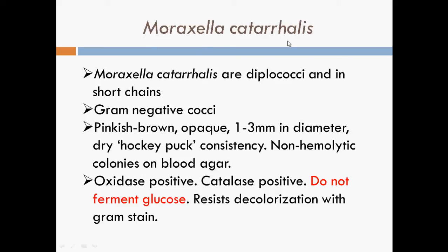The next bacterial genus is Moraxella. Moraxella catarrhalis is the bacteria we are going to look at under this genus. Moraxella is a genus of gram-negative bacteria named after a Swiss ophthalmologist called Victor Morax. Moraxella catarrhalis is derived from the Greek word 'catarrh', meaning to flow down, which describes the profuse discharge from the eyes and nose typically associated with severe inflammation and colds.